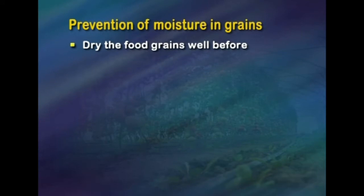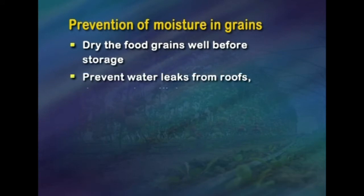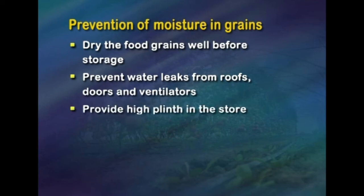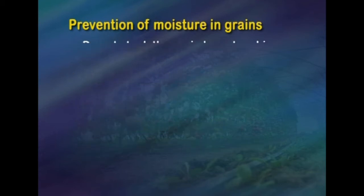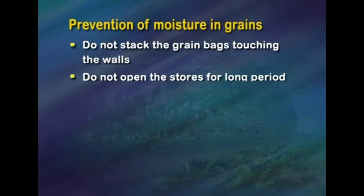To prevent moisture problems, you need to dry the food grains well before storage, prevent water leaks from roofs, doors and ventilators, provide high plinths in the store, make the floor moisture-proof, use wooden dunnage or polythene sheets, do not stack grain bags touching the walls, and do not open the stores for long periods during the rains.